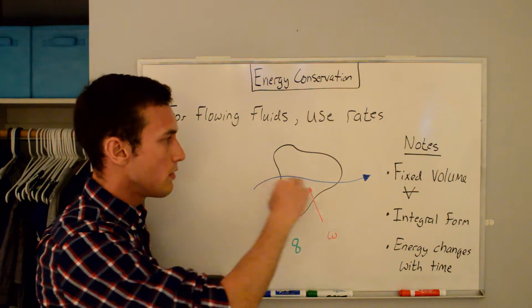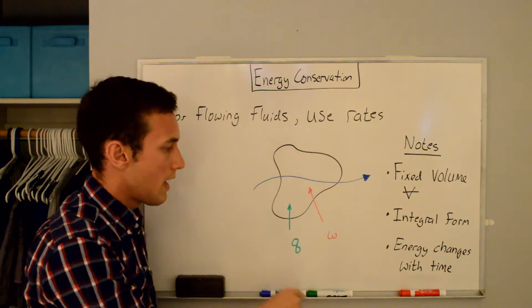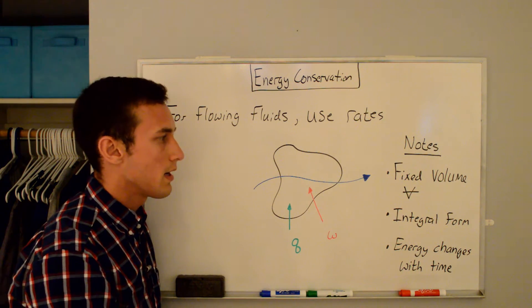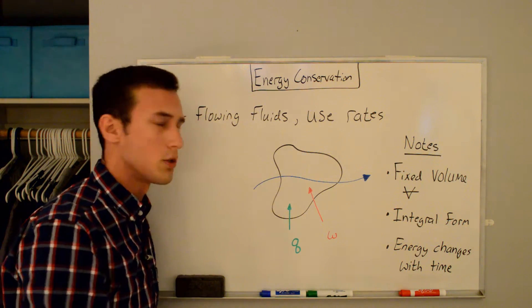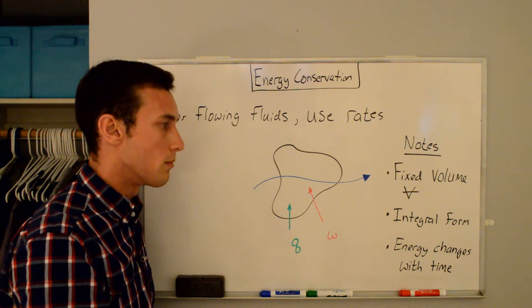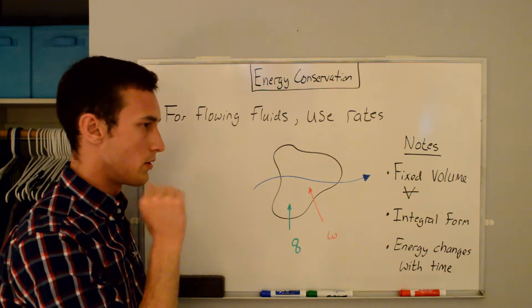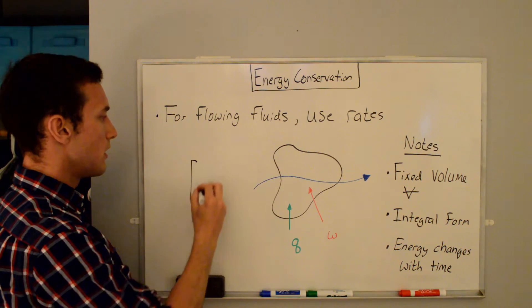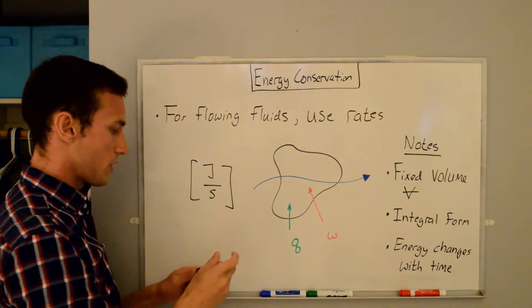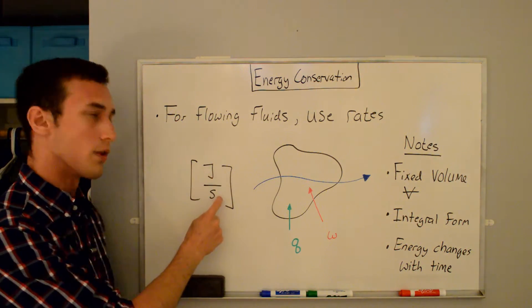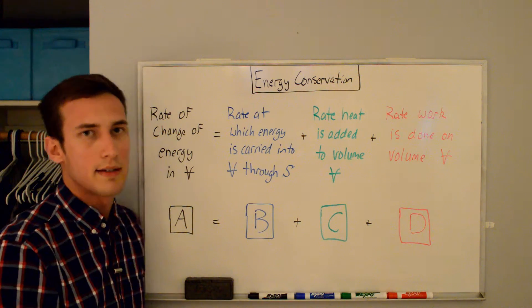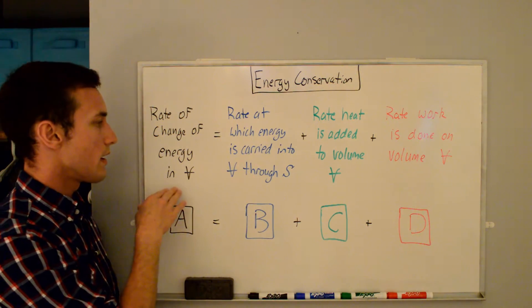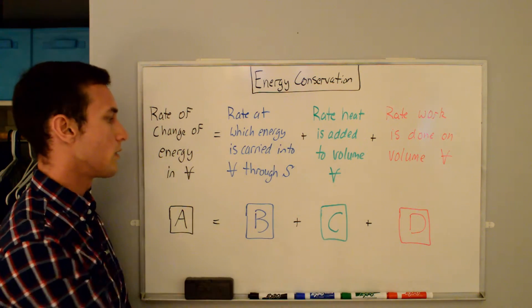You can see that there's fluid flowing through this volume. It's stationary, it's fixed, and we have the heat added and the work done on the system. What we're going to get is an integral form of the conservation equations, which you can transform into the vector form in another video. We'll get energy changes with time, which means we're going to get units for each term in joules per second. I've rewritten the first law of thermodynamics into a form using rates, and I'll color code the terms similarly for the rest of the video.